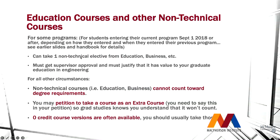Non-technical courses from the School of Business or Education can count toward your degree requirement depending on when you started your program, but you must get supervisor approval first. Otherwise they won't count. You are also allowed to take extra courses beyond your degree requirements for self-improvement, but you need your supervisor's approval. Graduate students don't pay extra for additional courses, though you don't get credit for them either.